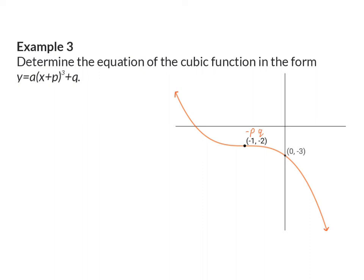So we can immediately start substituting that in. We will have a times bracket x plus 1 because the sign changes for p, minus 2. Then we need to realize that an extra coordinate was given and we can use that to substitute x with 0 and y with minus 3.